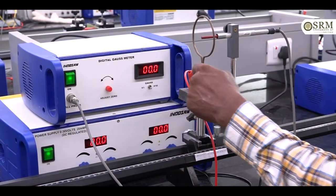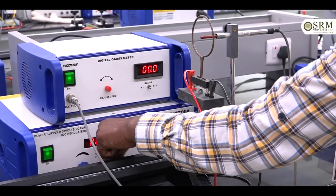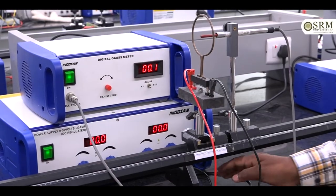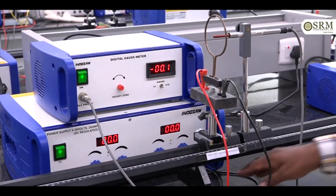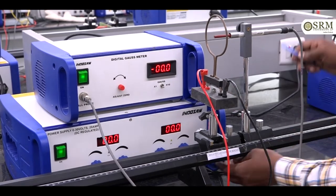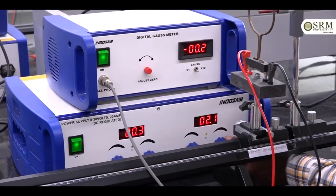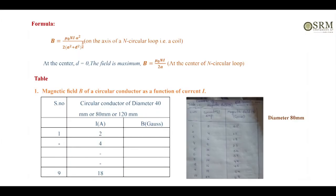Positive is connected to positive, negative is connected to negative — 30 volts to the circular coil. Apply 2 amperes and note down the value of the magnetic field. At 4 amperes, note down the value of the magnetic field, and repeat the process up to 10 amperes.